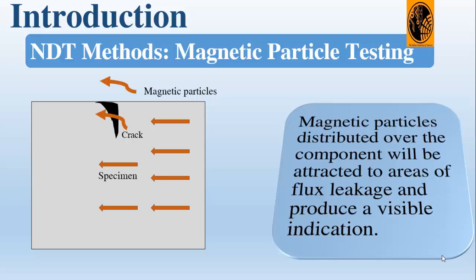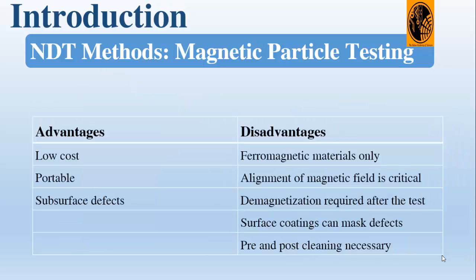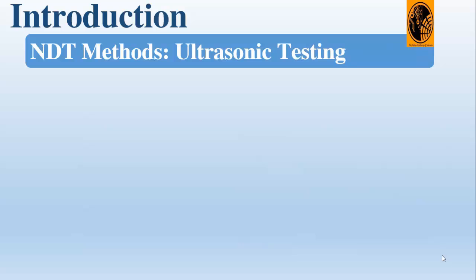The magnetic particles distributed over the component will be attracted to areas with flux leakage and produce a visible indication. The advantage of this technique is that it is low-cost and portable, and it gives indication of subsurface defects. The limitations are that the specimen must be ferromagnetic, the alignment of the magnetic field is critical, demagnetization is required after the test, and surface coating can mask defects.